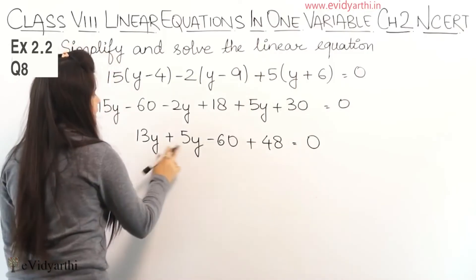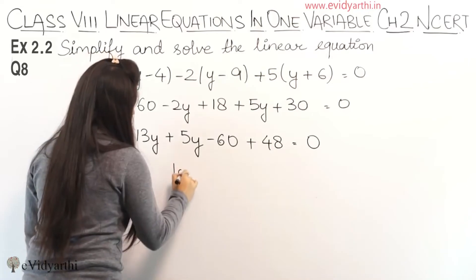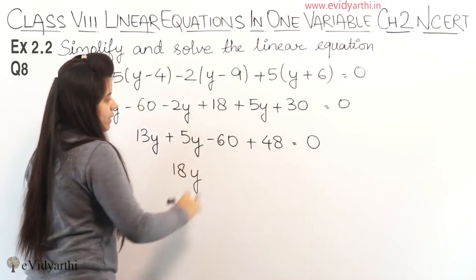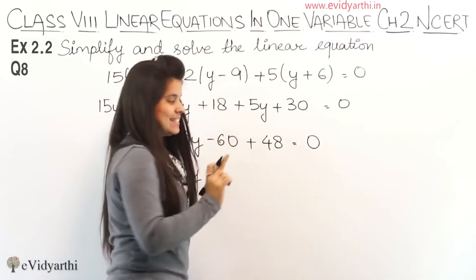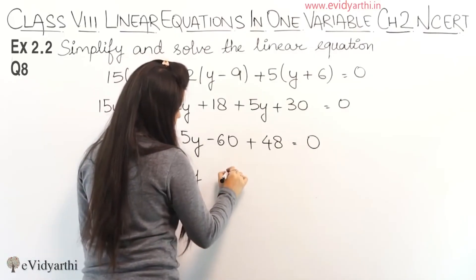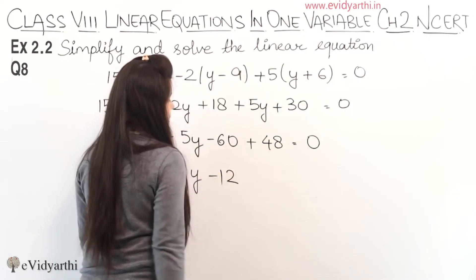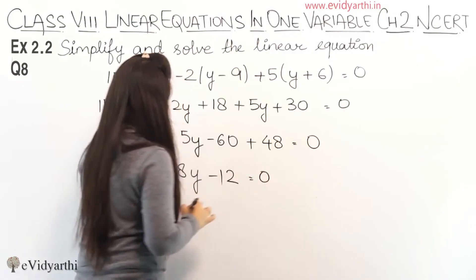Now let's solve this. 13 plus 5: 13, 14, 15, 16, 17, 18. So we get 18y. Plus minus minus gives minus. 60 minus 48: 10 minus 8 is 2, this becomes 5, 5 minus 4 is 1, so minus 12, equals to 0.